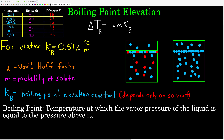The reason why adding a solute to a liquid decreases its vapor pressure and thus increases its boiling point is that the solute particles at the surface of the liquid take up space. There is less room available for the solvent particles to escape into the gas phase.